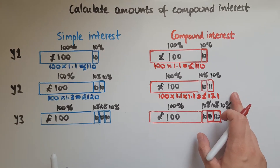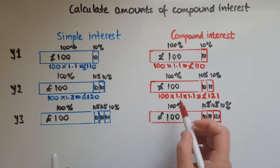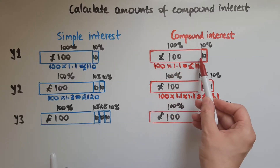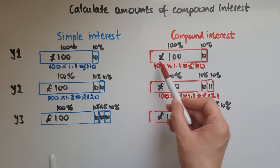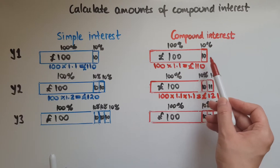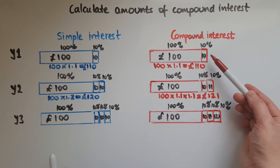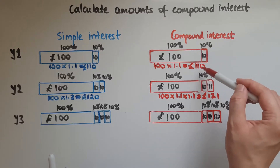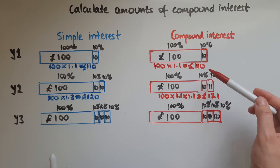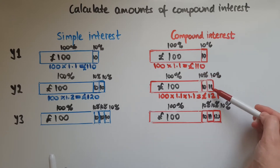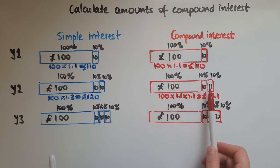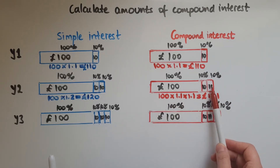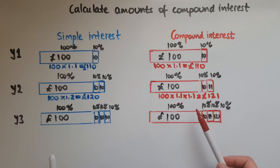To put it simply: we had a hundred, got ten percent, so that was a hundred and ten at the end of year one. The next year, you get ten percent of a hundred and ten — not the original hundred. Ten percent of 110 is 11, so we add 11 on top of 110, which makes a hundred and twenty one.